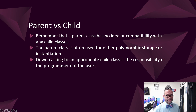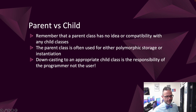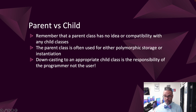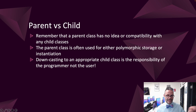So parent versus child: the parent class has no idea of or compatibility with any child classes — parent classes have no relationship with children at all. The parent class just provides that knowledge-based structure we can work with. The parent class is also used for polymorphic storage or instantiation. If I want to use a data structure to hold lots of different subtypes, that's where polymorphic storage is really great — I can make an ArrayList, an array, or a HashMap of different data types and do all sorts of cool things. Downcasting to the appropriate child class is the responsibility of the programmer. Make sure you have the correct downcasting in a multi-level hierarchical system so you don't throw incompatible type exceptions.